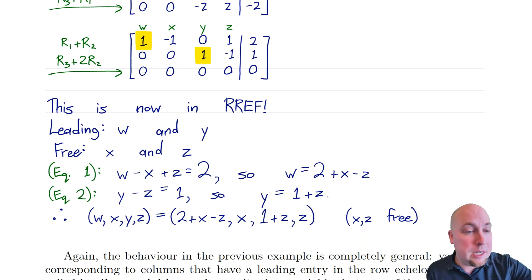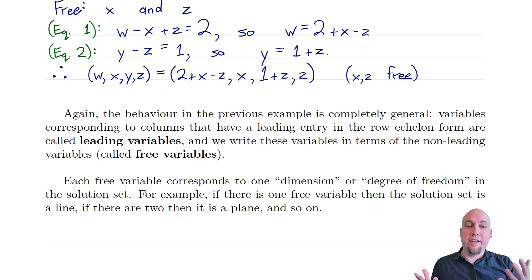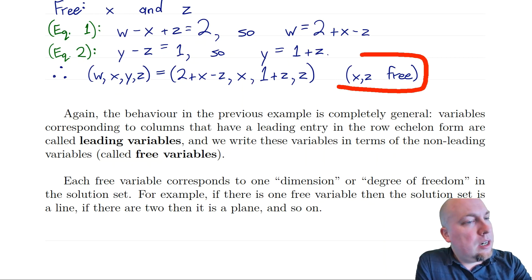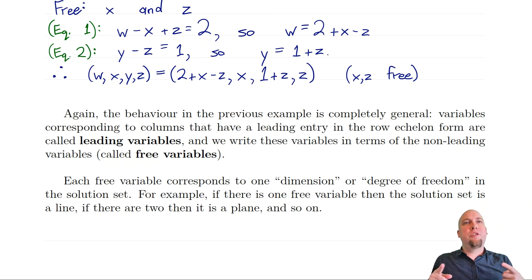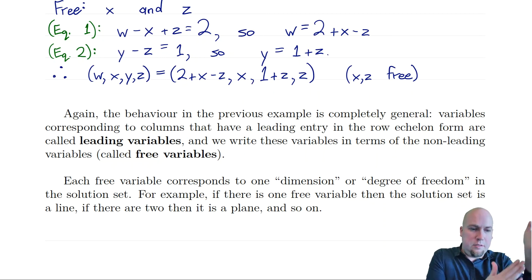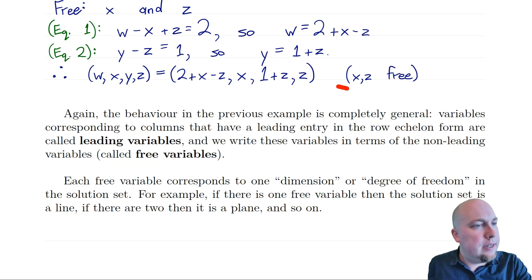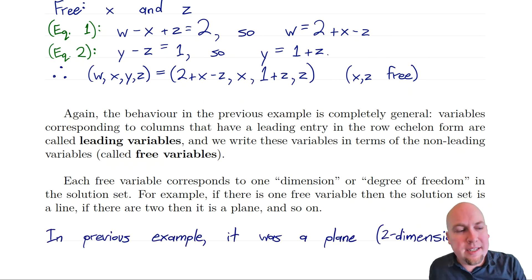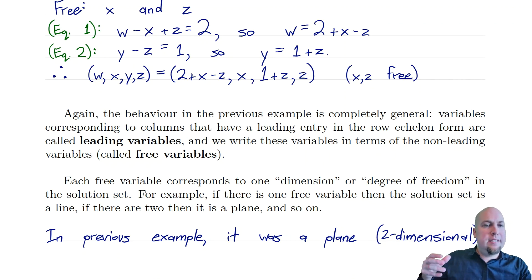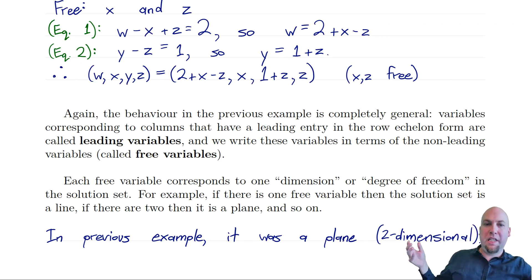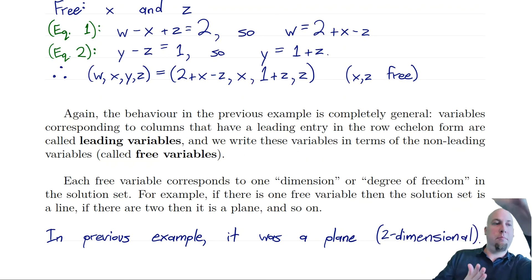You can choose X and Zed to be whatever you want and you'll get some solution of that linear system — it has infinitely many solutions. More particularly, because there are two free variables, there are sort of two dimensions of solutions. You've got a whole line of solutions in the X direction and a whole line in the Zed direction, and things in between as well. The number of free variables corresponds to the dimensionality of the solution set. Here, two free variables tells you the solution set is two-dimensional — it's a plane, a two-dimensional set living in four-dimensional space.